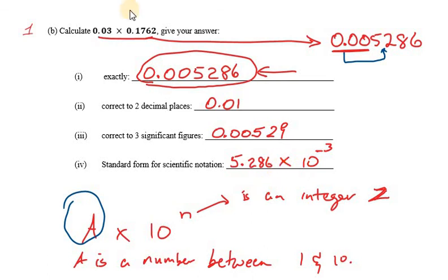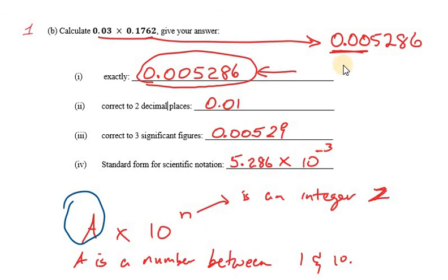A quicker way to look at it: as long as the original number starts with 0, you'll have a negative power of 10. Some people count the number of zeros — there are 3 zeros, so the power is negative 3. Basically, where the point is now, between the 5 and 2, if we shift it to get the original, we move it once, twice, 3 times to the left — negative 3. So this is the final solution in standard form: 5.286 times 10 to the power of negative 3.